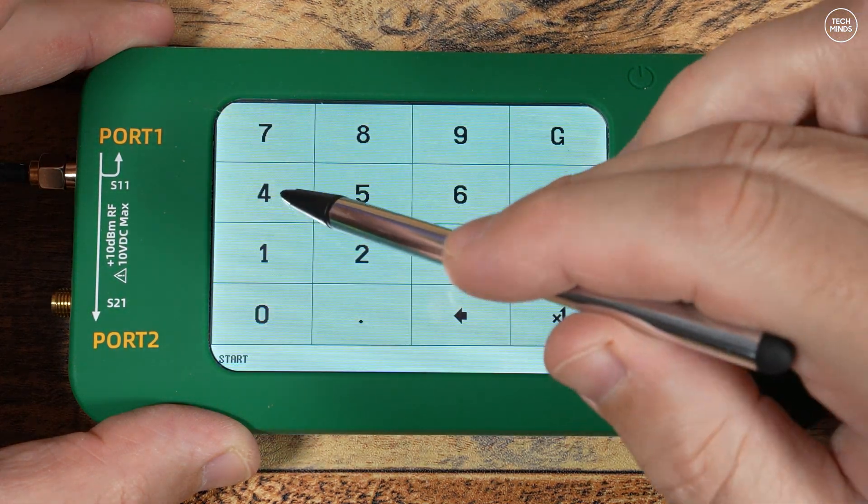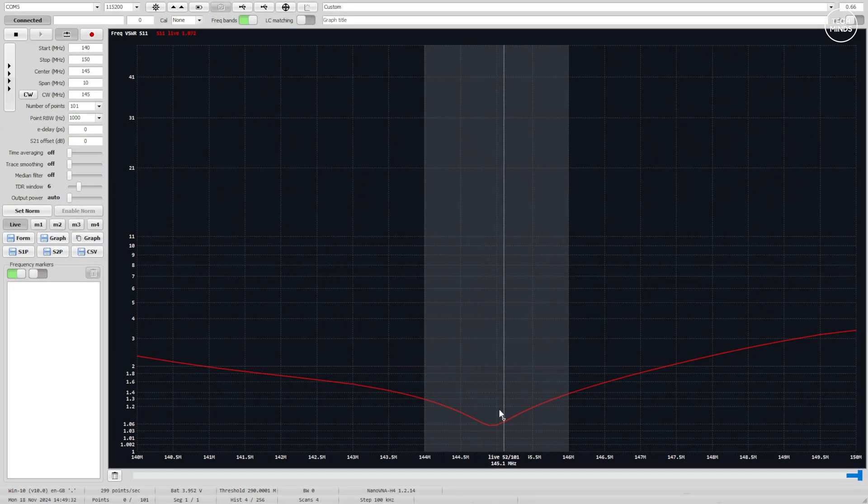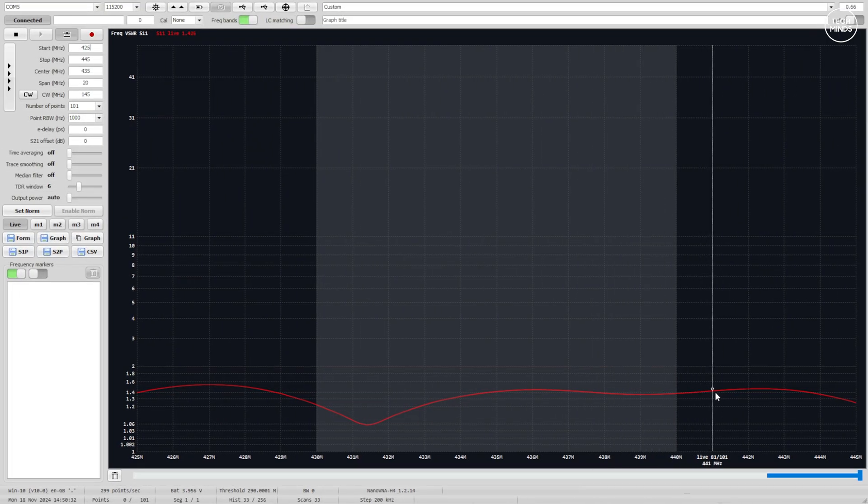Okay, so two meters looks good and it appears the Nano VNA software is working perfectly and shows the same values as what the device actually did. 70 centimeters also appears to look good and the same as what was shown on the actual device.